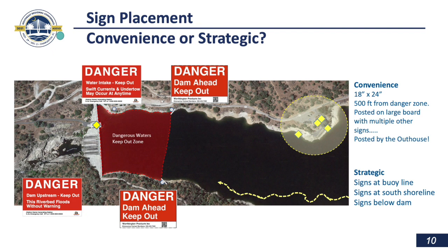Another consideration is what's taking place below the dam. In this case, there's a series of spill gates. If there is evidence of public access below the dam, we also want to make sure we have signs where the public would be accessing those areas. Here we show an example of an access sign below the dam.